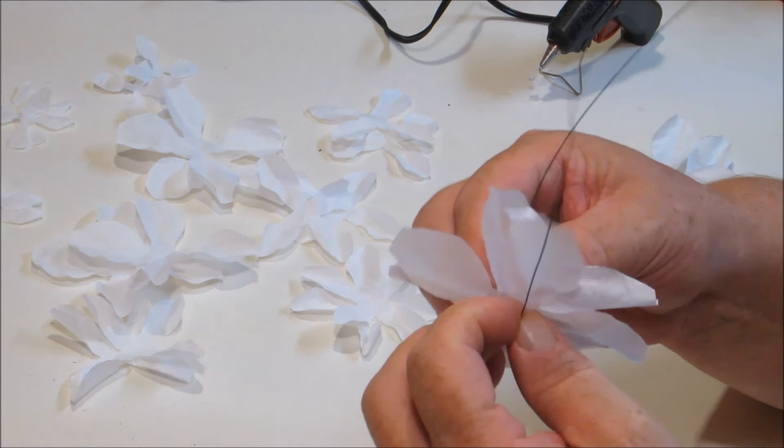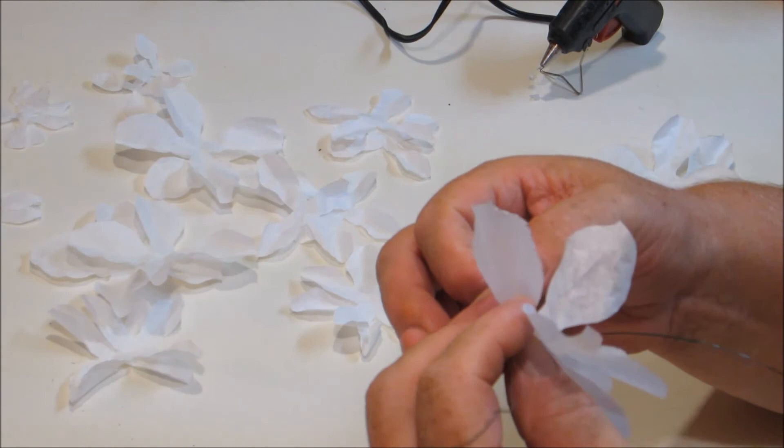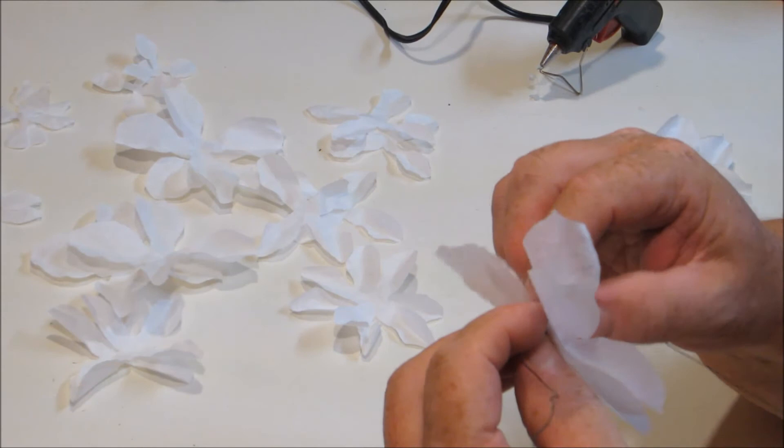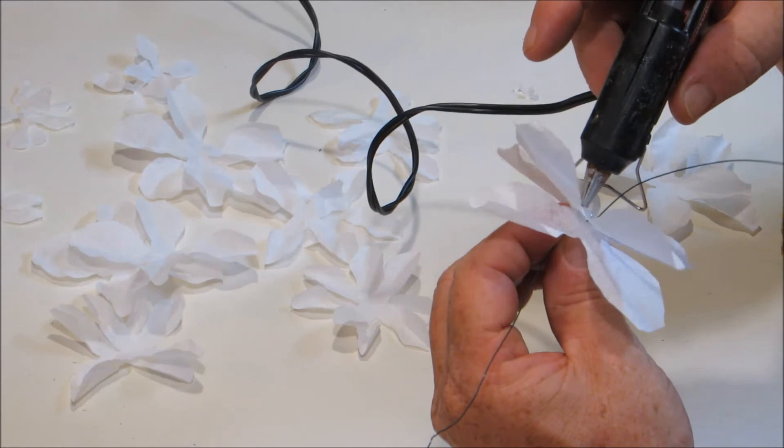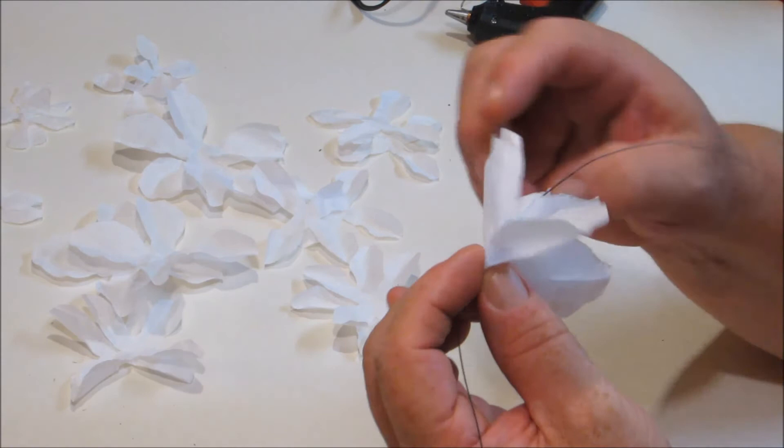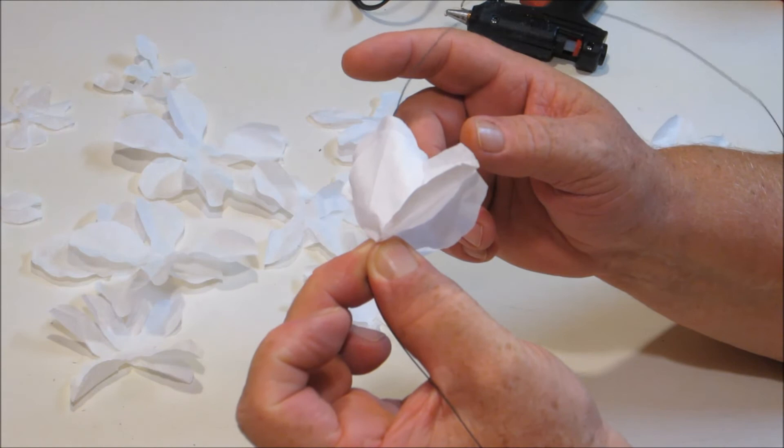All right, now we're going to take a glue gun and put a little dot of glue right in the middle of it. We're going to close it in on it and kind of pinch it like that, and that way it glues both of them together and to this wire, just like that. And then just kind of open them back up a little.